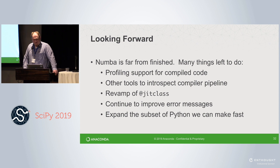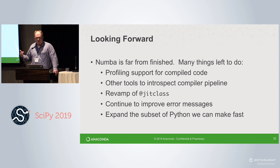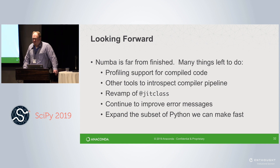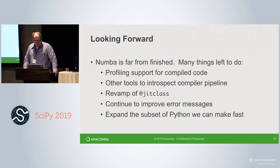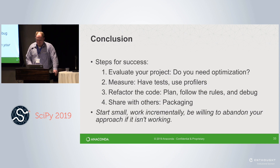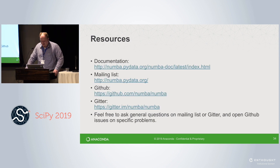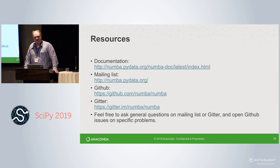Numba is far from finished. We have many things left to do. Big for us is giving you better tools to know what's going on — profiling, looking at what the compiler is doing. Being able to JIT a class has limited support and we know you want more. Error messages are the eternal struggle — it's hard to reconstruct exactly what to tell you was wrong once we've done all the translation, but we'll always keep working on that. We'll be sprinting on Numba tomorrow — come if you want to contribute or figure out how to use Numba with your project. Those conversations teach us things we didn't know about what you're trying to do. Thanks everyone.